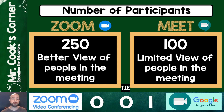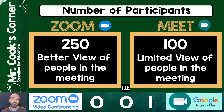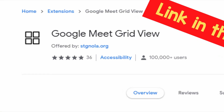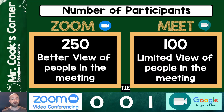The next thing I want to take a look at is the number of participants. Zoom does have Meet beat by a long shot. You can have up to 250 people in a Zoom meeting, whereas with Google Meet, you're only going to have about 100 people allowed. Now for most people, this is not going to be that big of a deal — most teachers aren't going to have classes bigger than 100. However, in my opinion, the more important thing here is the view. With Zoom, you can see more people, you can have a better page view, and the grid view is really neat — you can see just about everybody at one time. Whereas with Google Meet, you have a very limited view of the people in the meeting. There is a Google extension called Grid View for Meet you can install and run with Google Chrome, but in this case, Zoom has definitely got the upper hand.